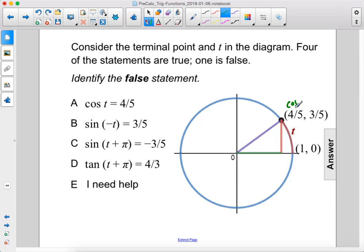All right, so this is our cosine value, this is our sine value. Cosine t is four over five, that is true.